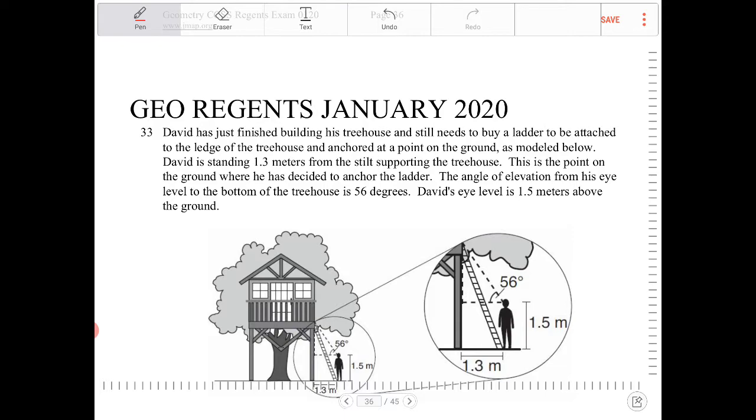David is standing 1.3 meters from the suit supporting the treehouse. This is the point on the ground where he has decided to anchor the ladder. The angle of elevation from his eye level to the bottom of the treehouse is 56 degrees. David's eye level is 1.5 meters above the ground.